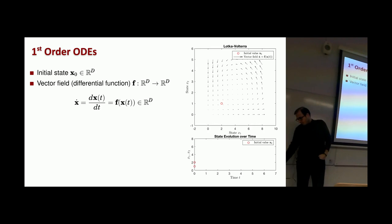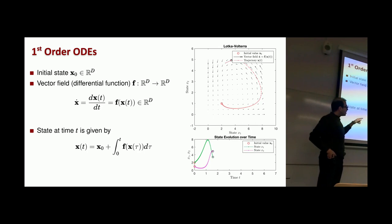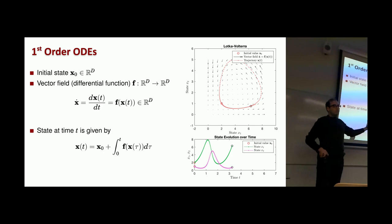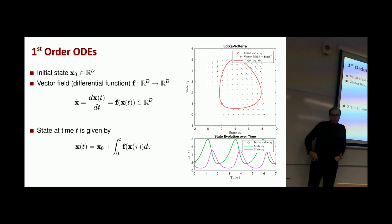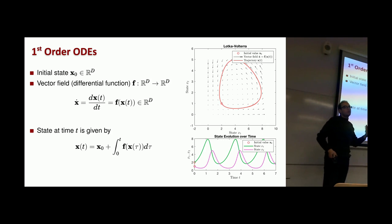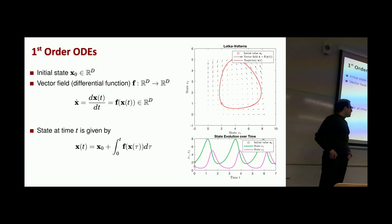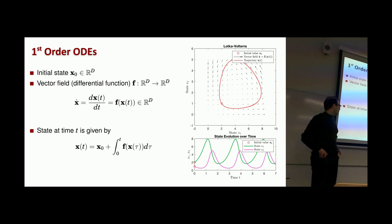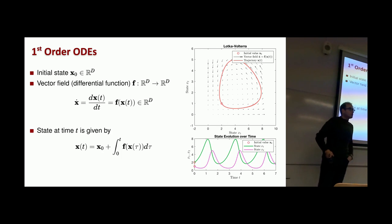As we integrate the system, the trajectory follows the vector field, and we see the state evolution over time. That's the picture when we integrate up to time 7. Lotka-Volterra is typically used for prey-predator relationships — when one state increases, the other decreases. The integration is almost always done numerically since closed-form solutions are usually unavailable. We typically use either adaptive step-size solvers like DOPRI-5 or fixed step-size solvers like Runge-Kutta. Both methods are implemented in PyTorch, TensorFlow, NumPy, MATLAB, and many other environments.